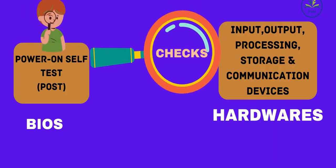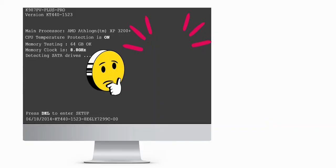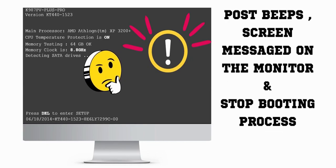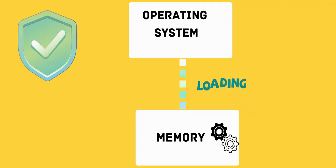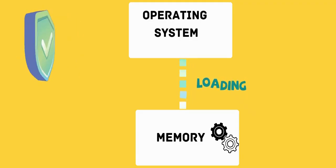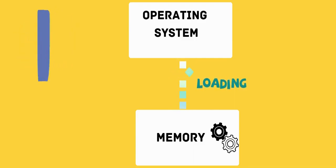Step 2: POST — Power On Self Test. In order to check the operability of all hardware connected to our computer system, BIOS carries out a Power On Self Test, which checks all hardware components connected to the system. If any problem is found, the user is alerted with POST beeps and POST screen messages on the monitor, and the booting process stops. Otherwise, if the test is successful, the operating system is loaded into computer's memory and the process moves to the next step.